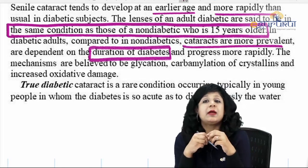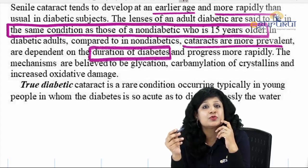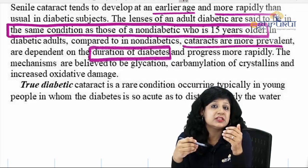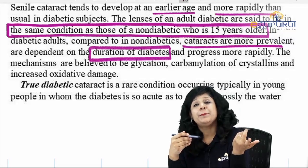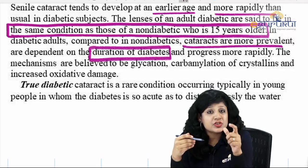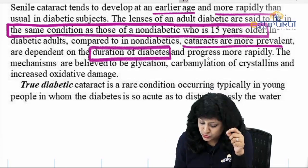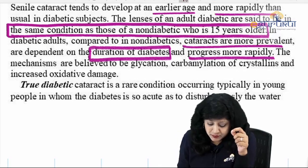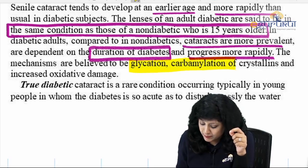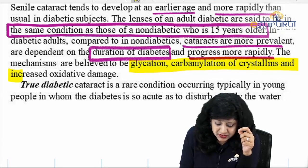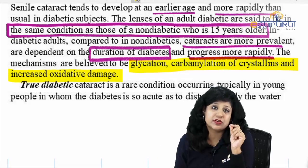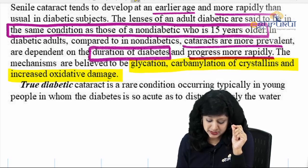Just as in diabetic retinopathy, the most important factor for development is the duration of diabetes. In diabetic cataract, duration is also most important. It spreads more rapidly, and the mechanisms believed to be responsible are glycation, carbamylation of the crystallins, and increased oxidative damage — these are the things responsible for development of diabetic cataract.